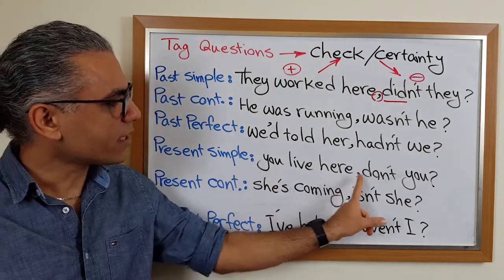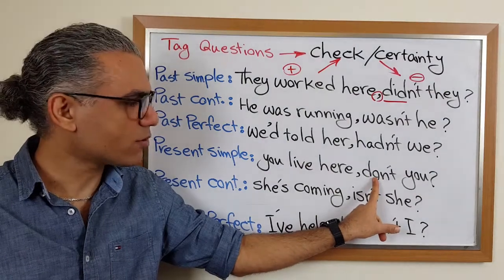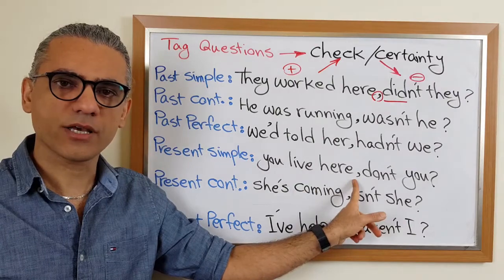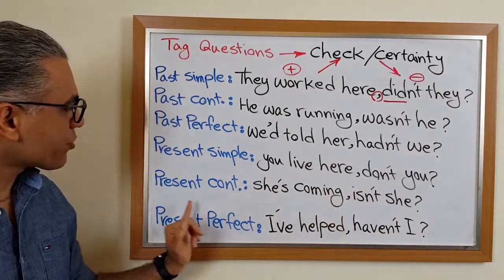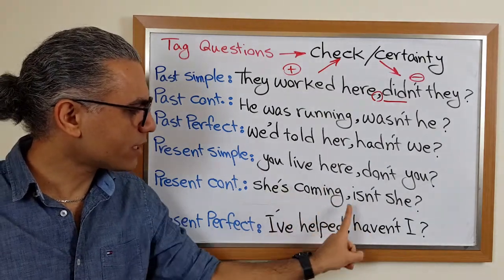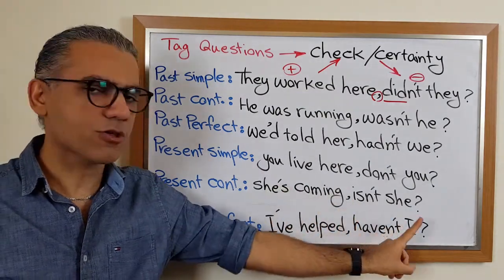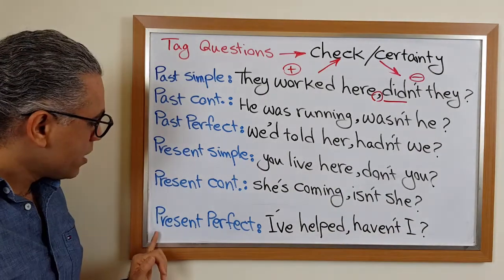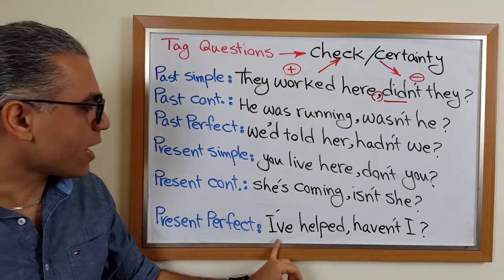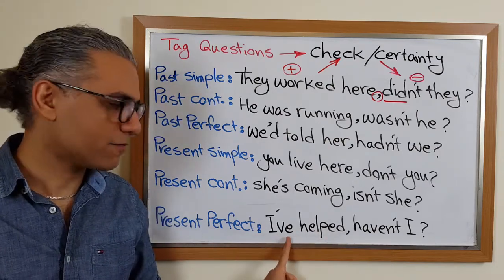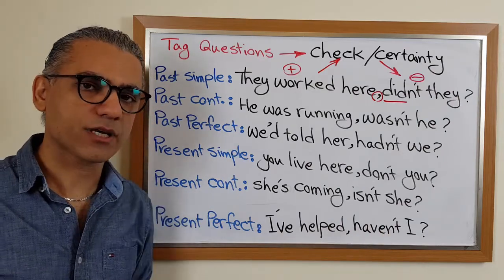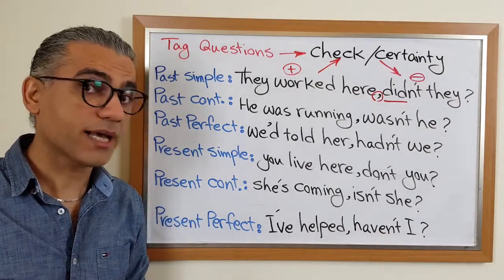Present simple: 'You live here, don't you?' — auxiliary verb 'do,' positive becomes negative, comma. Present continuous: 'She's coming, isn't she?' — auxiliary verb 'is,' positive becomes negative, comma. Present perfect: 'I've helped, haven't I?' — auxiliary verb 'have,' positive becomes negative, comma.